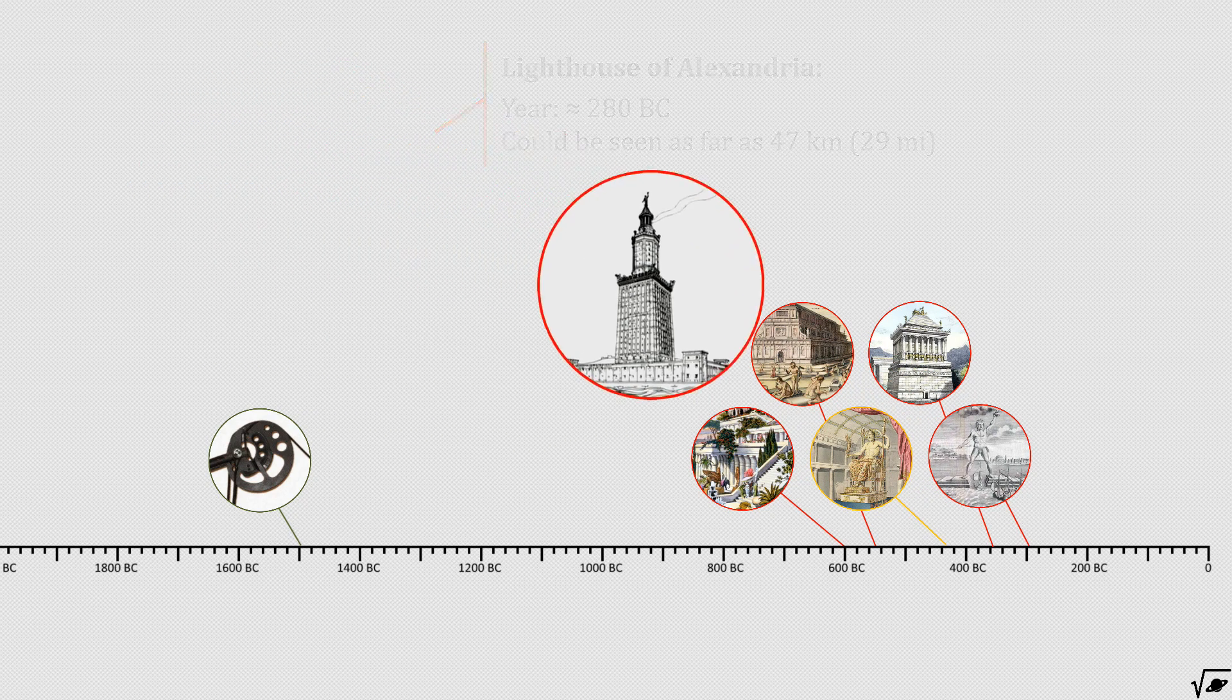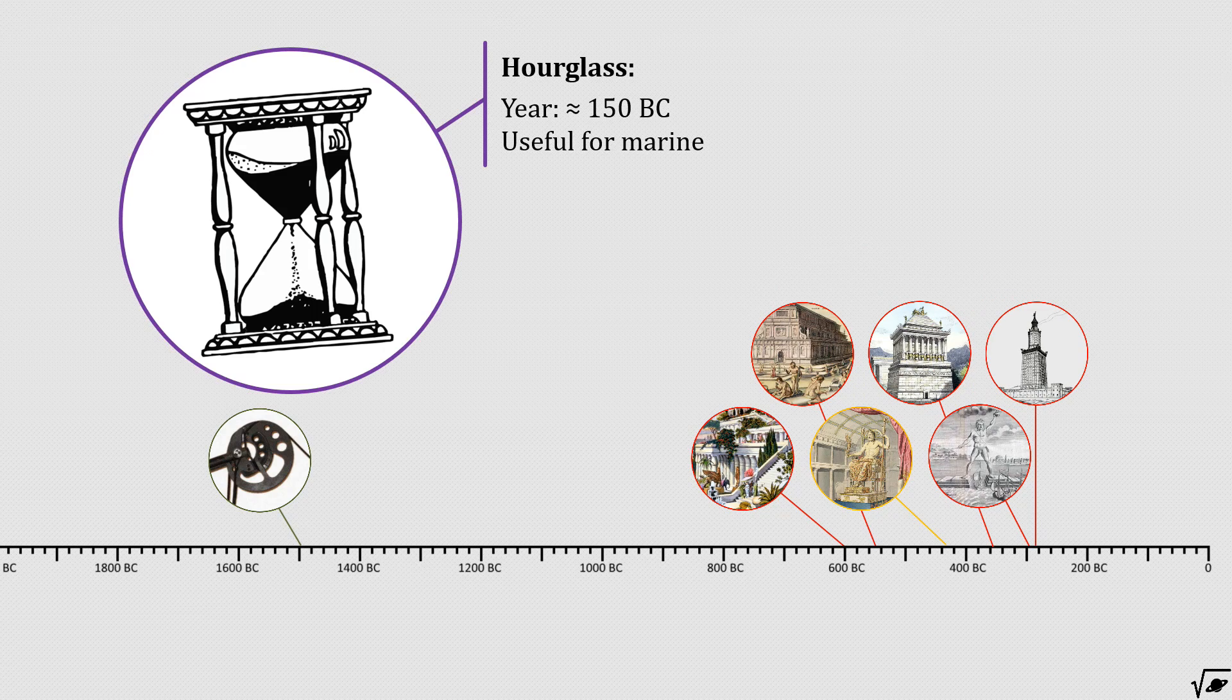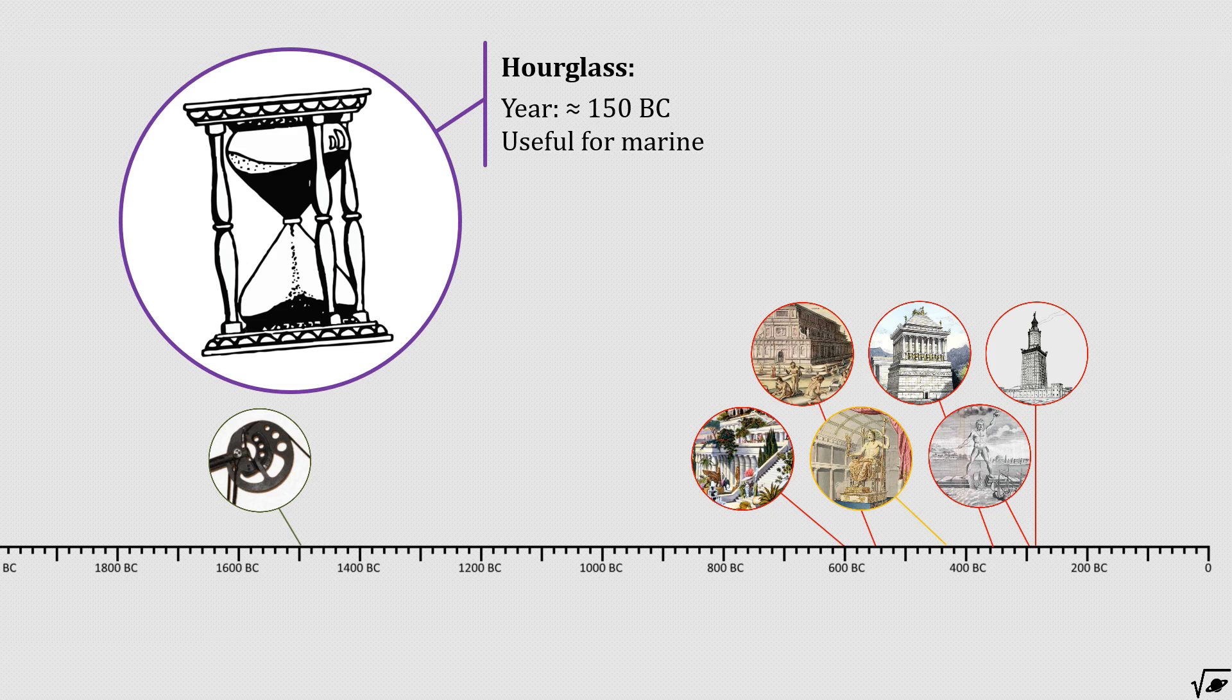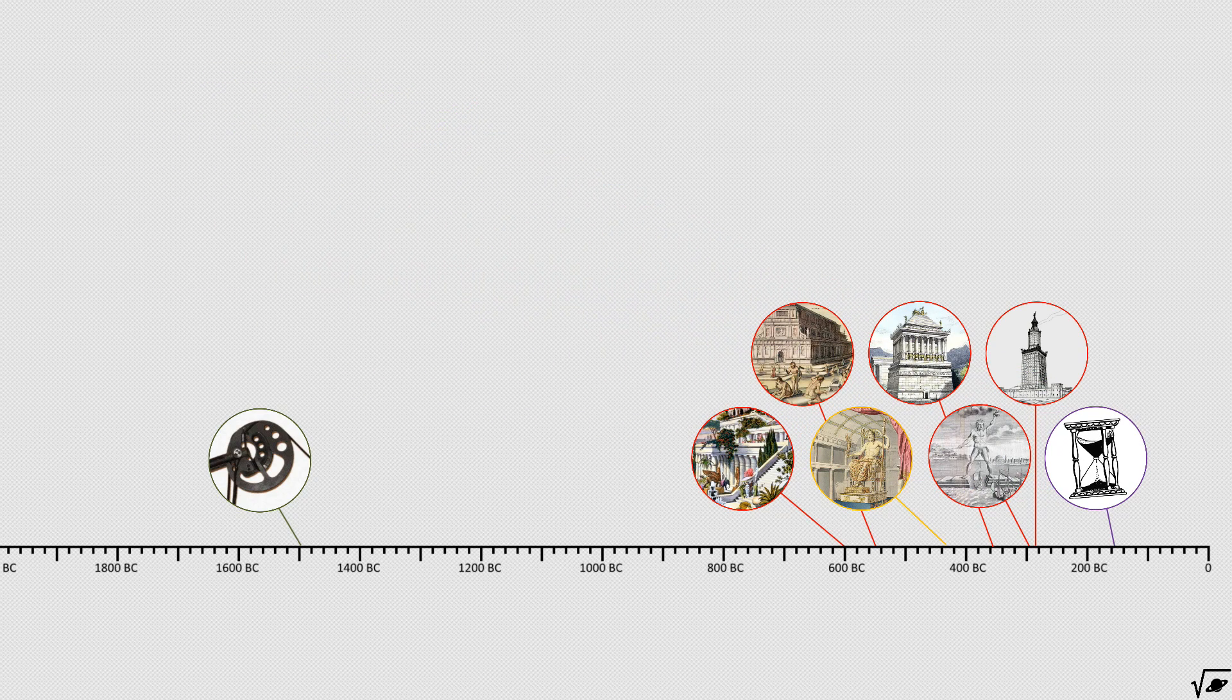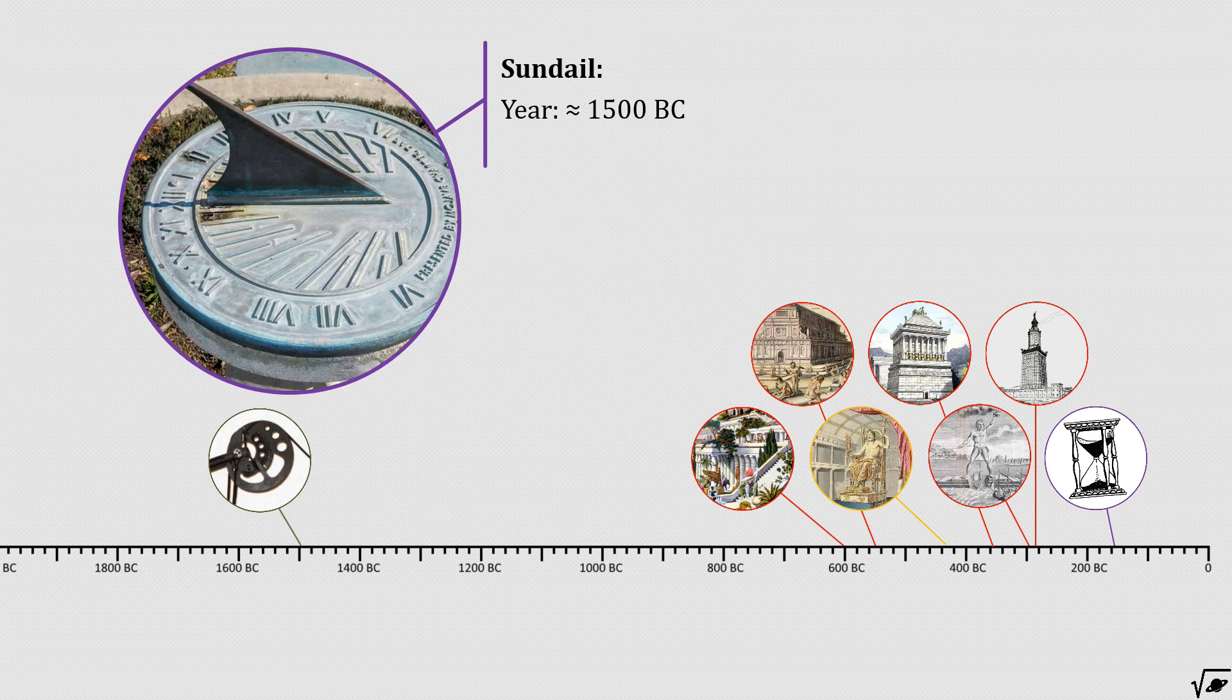Built in the city where 130 years later the hourglass was invented. A great timekeeping device that could accurately track small amounts of time. Since all they had before was the sundial, invented around 1500 BC.